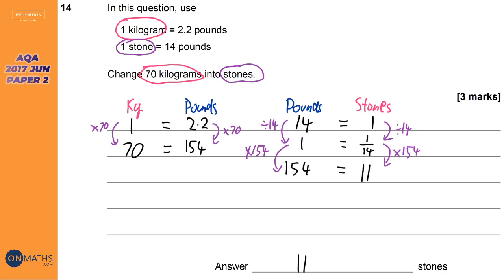So we've got 1 over 14 times 154, which is 11. So it's 11 stone. Now, all of these say use that, which means that 1 kilogram isn't exactly 2.2, but it's saying just you assume that it is, what's the answer going to be, and the answer is 11.